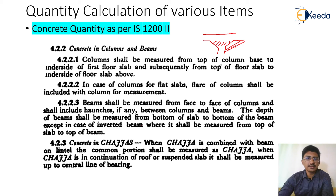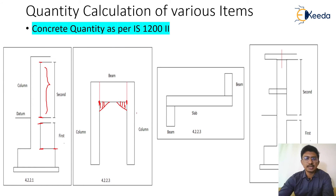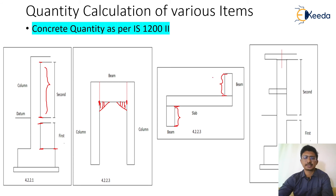The depth of the beam shall be measured from the bottom of the slab to the bottom of the beam, and in the inverted case, vice versa. So for a normal beam, depth is measured from the bottom of the slab to the bottom of the beam. For an inverted beam, it is from the top of the slab to the top of the beam.